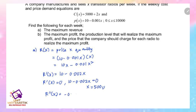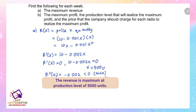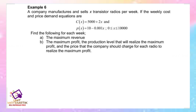Testing with the second order derivative: R''(x) = -0.002, which is less than zero, confirming it is a maximum. The revenue is maximum at a production level of 5000 units. Substituting x = 5000 into the revenue function: R(5000) = 10 × 5000 - 0.001 × 5000².